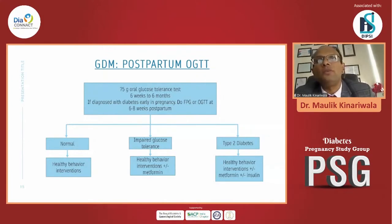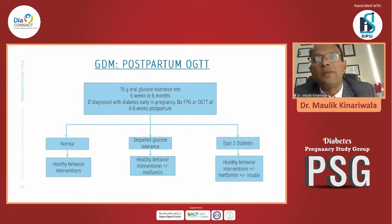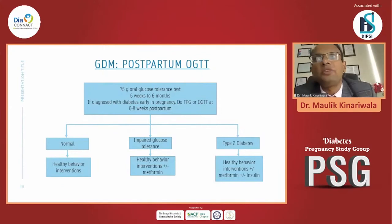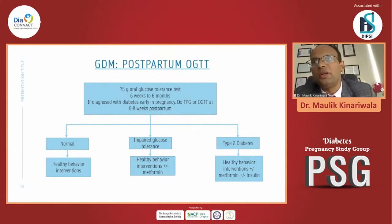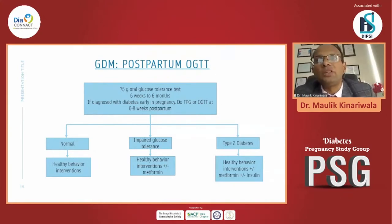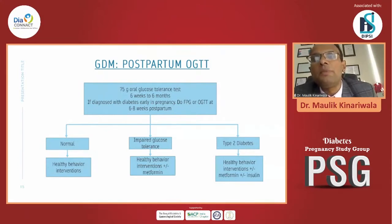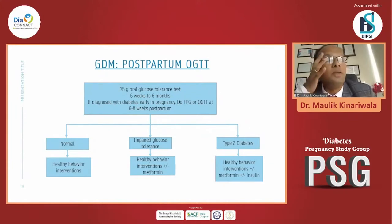If the patient is labelled with IGT, lifestyle modifications are required. On top of that, you can consider metformin. When a patient is labelled as having type 2 diabetes, insulin plus metformin plus lifestyle modification is required if blood sugar is very high. If not managed with lifestyle modification and metformin, we use insulin until the patient delivers and while the patient is breastfeeding.